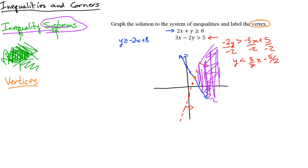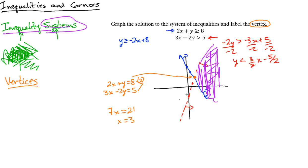To find the vertex, we take the two boundary lines: 2x + y = 8 (blue line) and 3x - 2y = 5 (red line). Even though the dashed line isn't part of the purple solution region, that's where the corner is. We intersect the two lines using elimination — multiply the top equation by 2 and add it to the bottom.